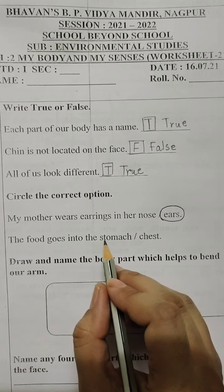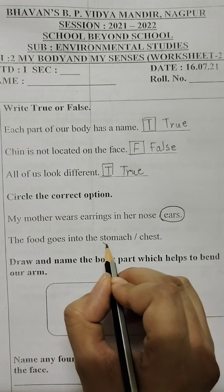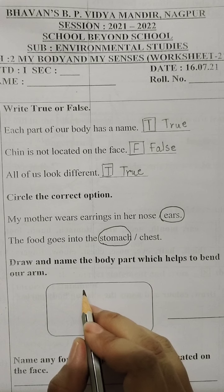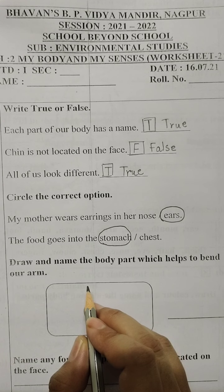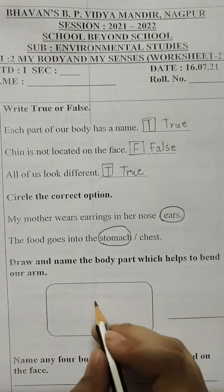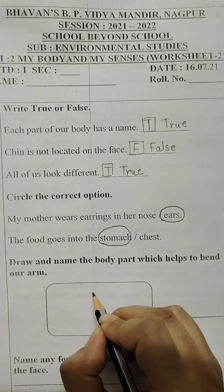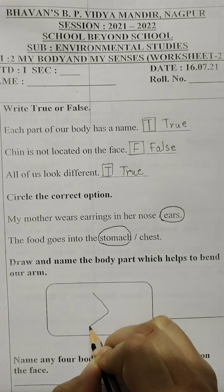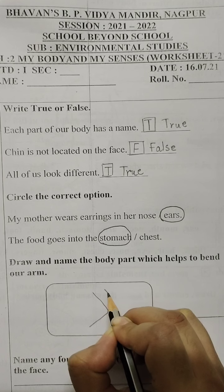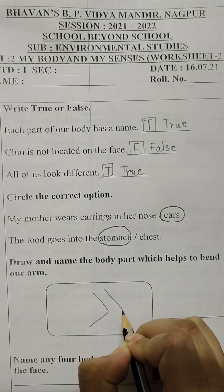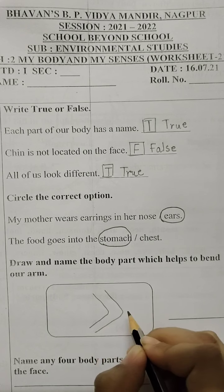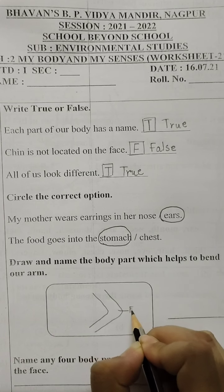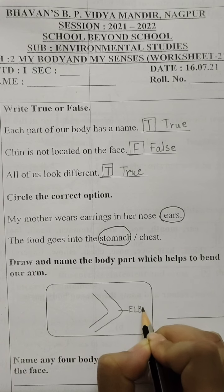The food goes inside the stomach and it is the place where it gets digested. Now they are saying name the body part which helps us to bend our arm. Arm is our portion from our shoulder to our wrist where we wear the watch. Which is the body part or the joint which helps us to fold or bend our hands? It is the elbow.